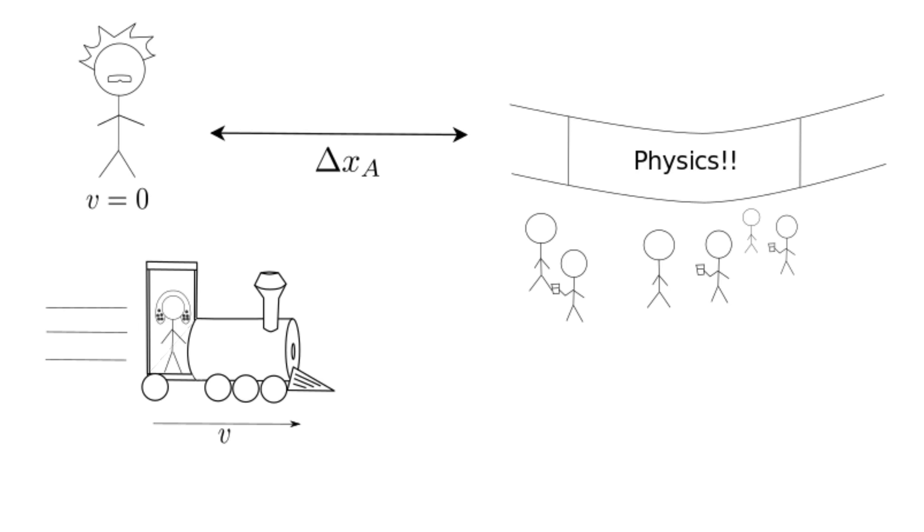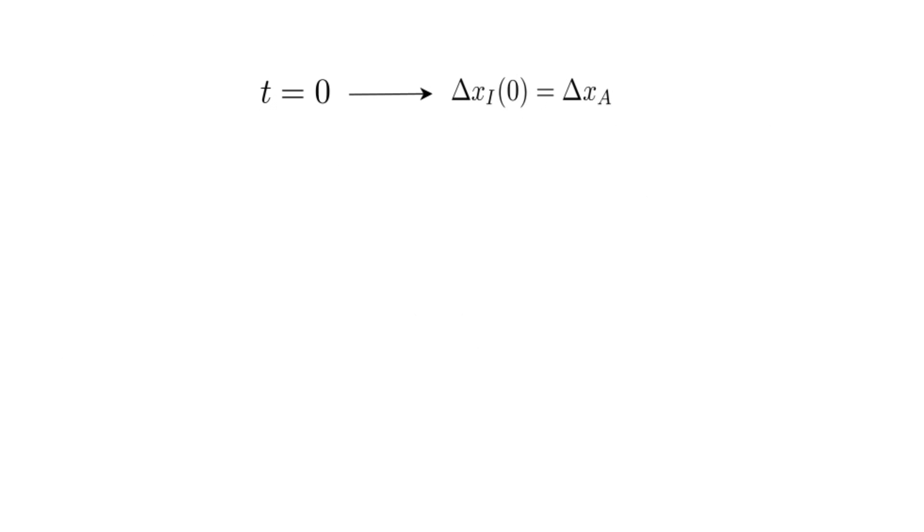Let's say that the distance Albert is from the conference is delta xa, and the distance Isaac is from the conference is delta xi. Since Albert is not moving, delta xa will not change. But since Isaac is moving, delta xi will be a function of time. Since Isaac started at the train station that Albert is stranded at, we know that when t is equal to zero, delta xi is equal to delta xa.